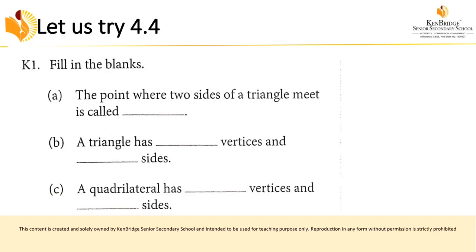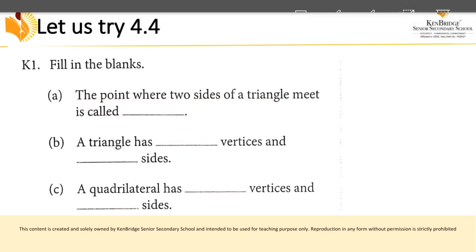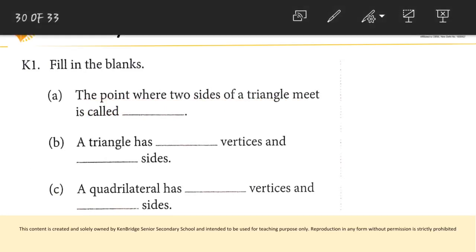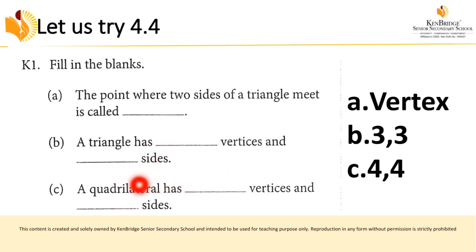Exercise 4.4, fill in the blanks: the point where two sides of a triangle meet is called a vertex. A triangle has three vertices and three sides. A quadrilateral has four sides and four vertices.